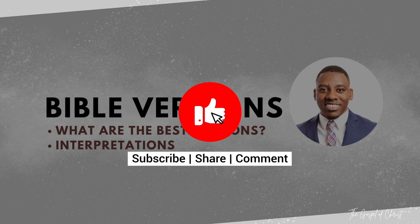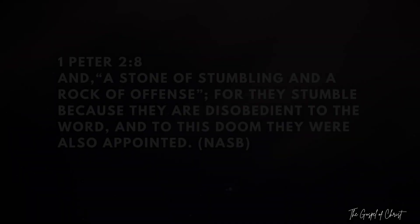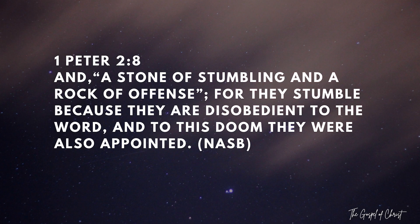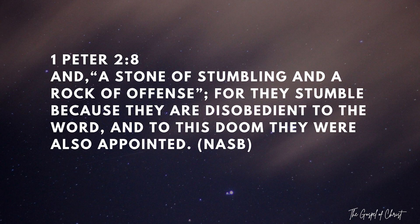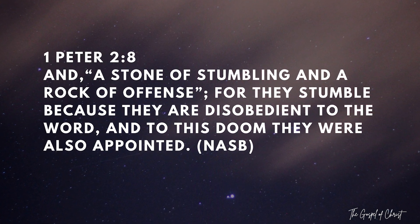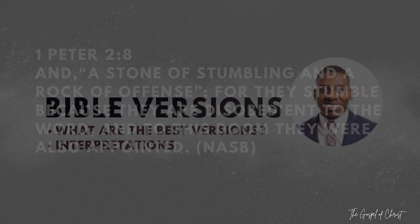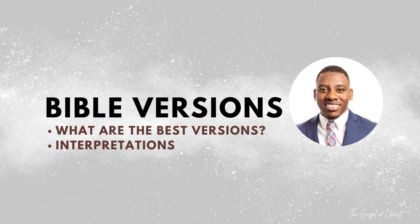As I was reading 1 Peter this week, I came across a verse which is a bit challenging when it comes to its interpretation. It's 1 Peter 2 verse 8, and it reads as follows: 'And a stone of stumbling and a rock of offense, for they stumble because they are disobedient to the word, and to this doom they were also appointed.' This is from the NASB version — the New American Standard Bible.